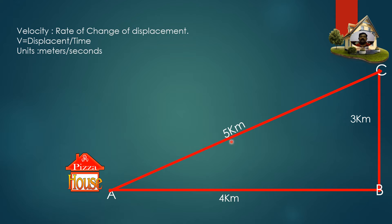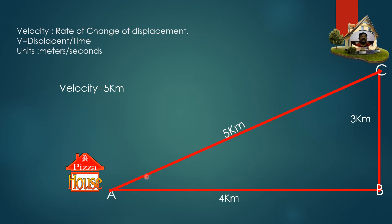In this animation, the displacement is 5 kilometers because ABC is a right-angle triangle, so AC is the hypotenuse. Using the Pythagoras theorem: AC² = AB² + BC², which gives AC = 5 kilometers. Assuming the time taken to reach from A to C is 2 hours, the velocity is 2.5 kilometers per hour.